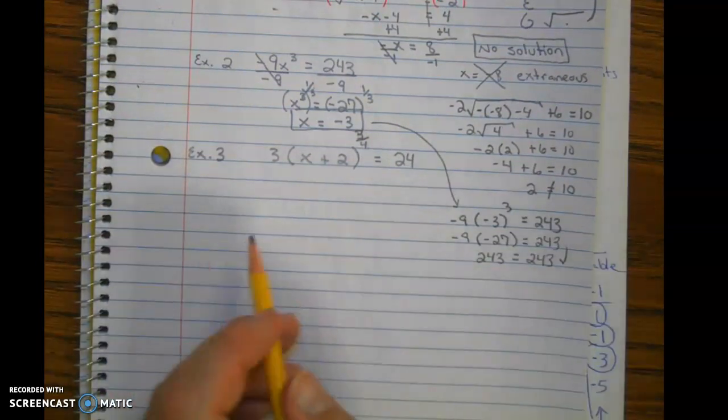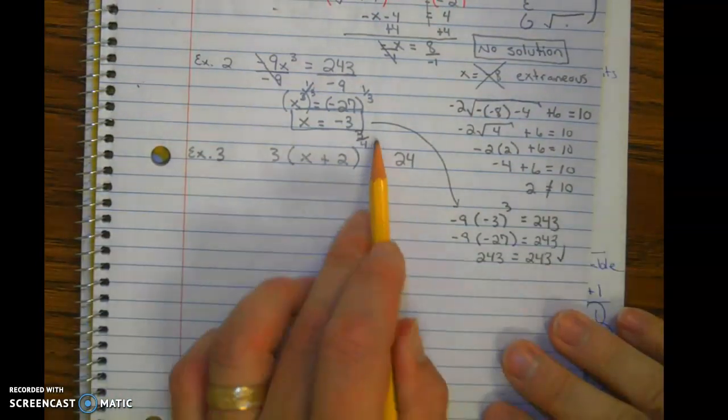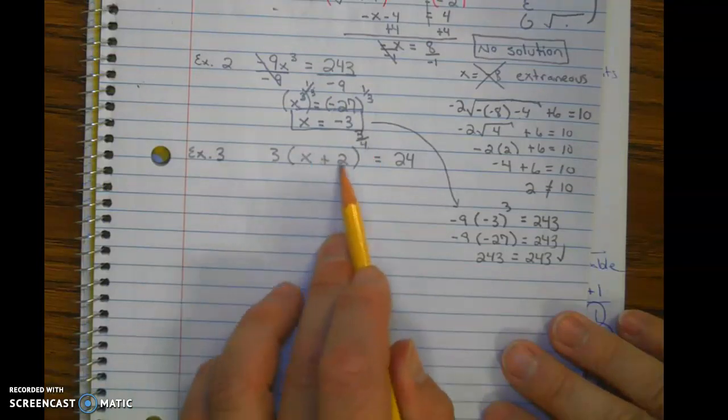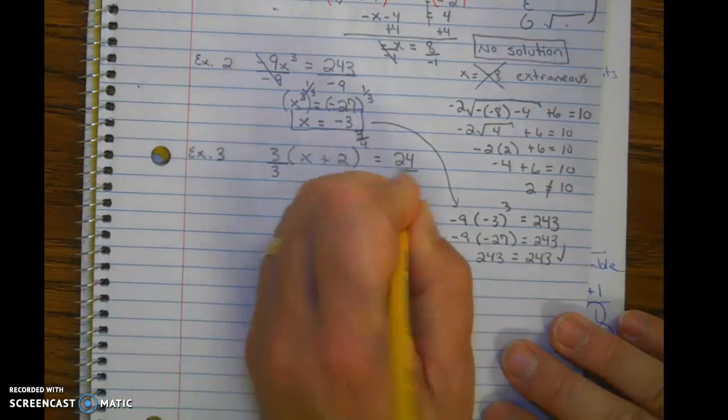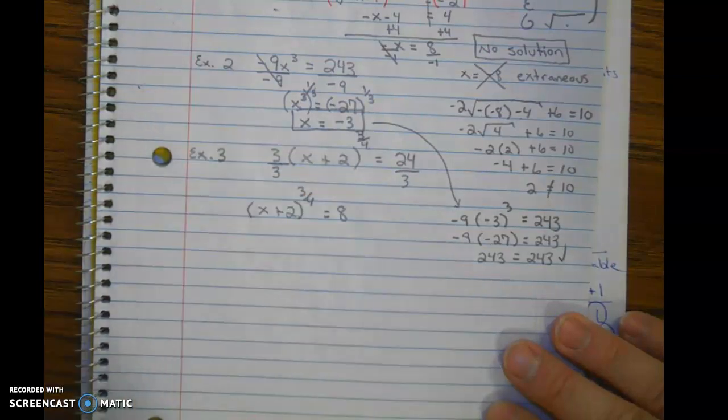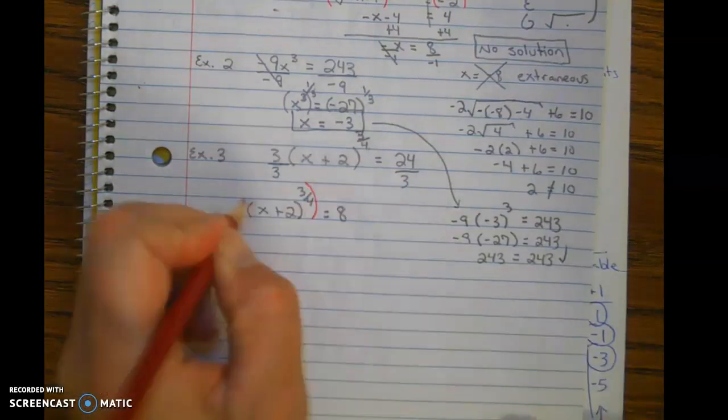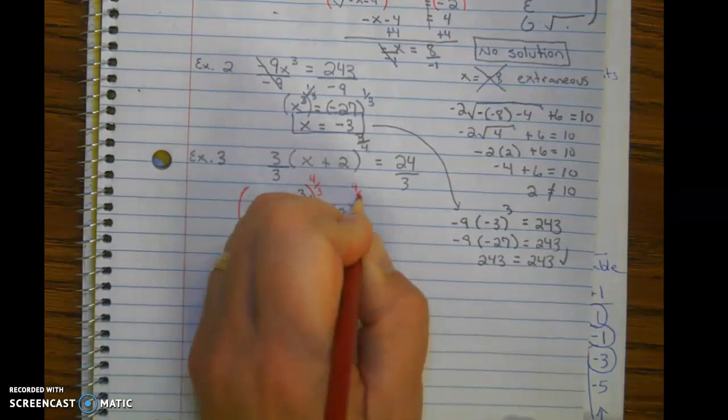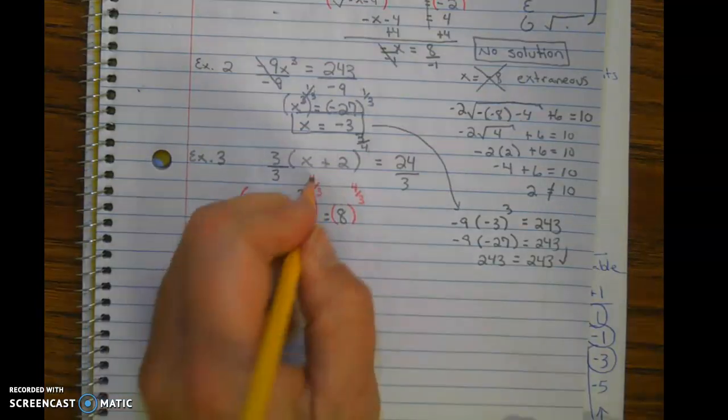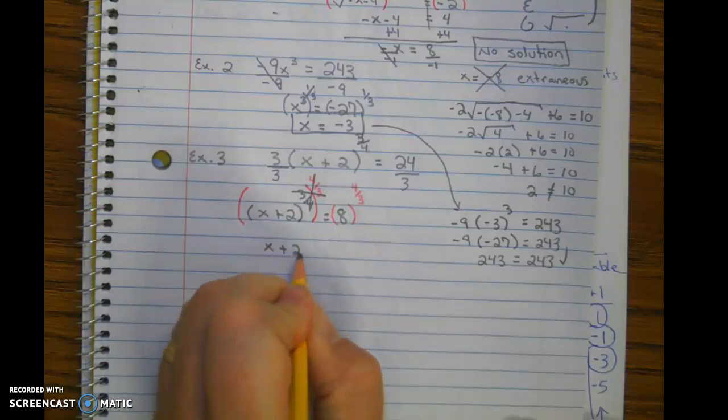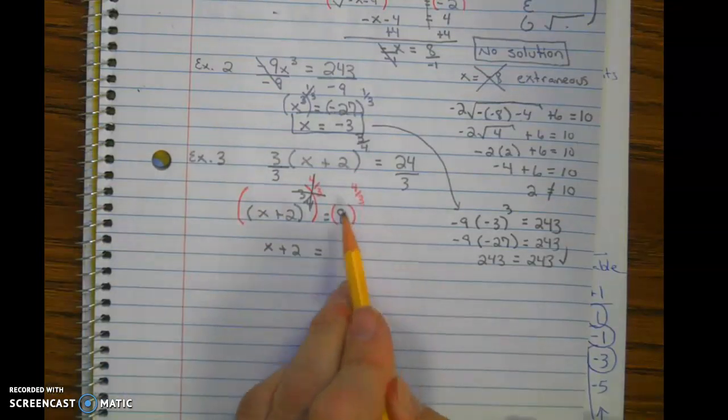Next example. Here we go again, undoing GEMDAS. There's no adding and subtracting to undo first. Remember this is inside the grouping symbol, until we do this last when we're solving. So then we're going to undo the multiplying, and then we're going to undo the exponent by raising it to the reciprocal power. 3 fourths times 4 thirds is 12 over 12, which is 1. So cube root of 8 is 2, and 2 to the fourth power is 16.